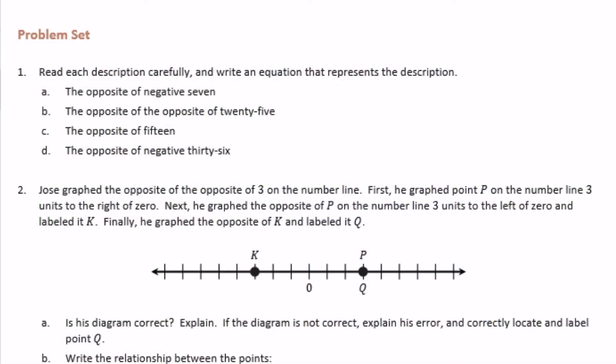Sixth grade, module 3, lesson 5, problem set. Read each description carefully and write an equation that represents the description. The opposite of negative 7. So we're writing an equation, which means it's going to have an equal sign and an answer. If it said expression, we wouldn't have an equal sign and an answer.